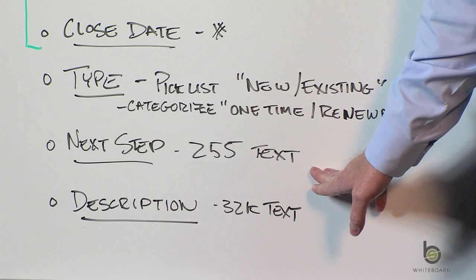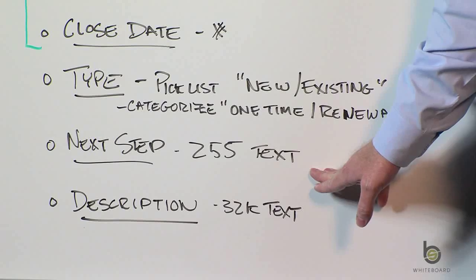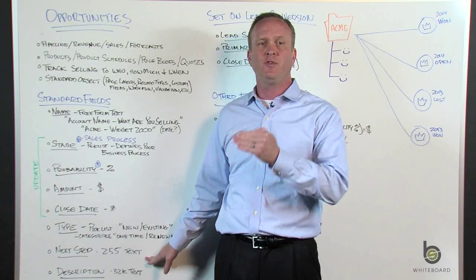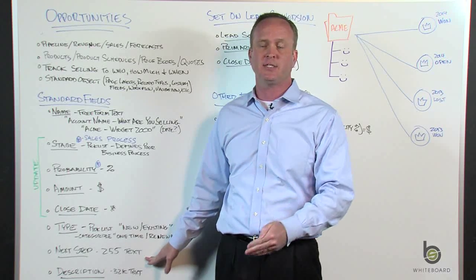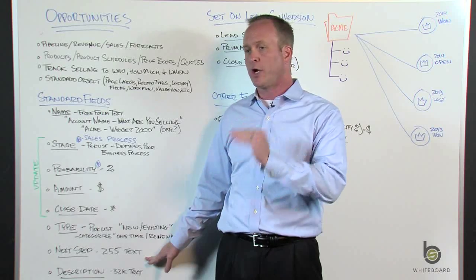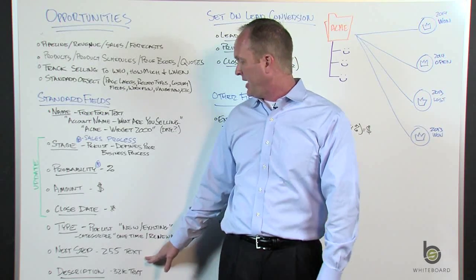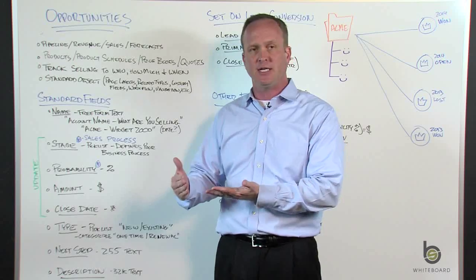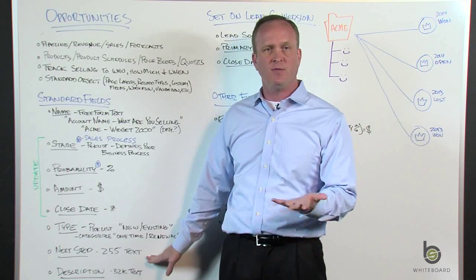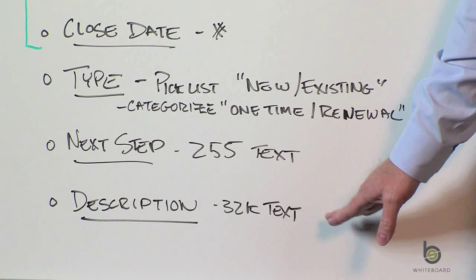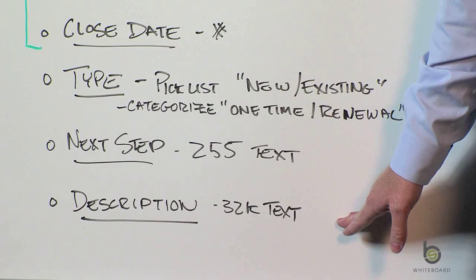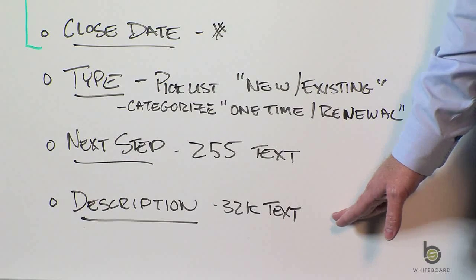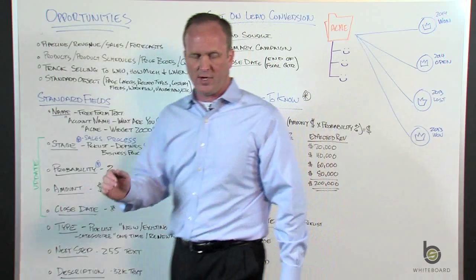Next Step is a 255-character text field. I like to use this field to let everybody know what needs to happen to move the deal or opportunity stage forward in the process — for example, a blurb about what's happening right now or the action needed to move to the next step. And then you have a description field, a very large 32,000-character text field, where you can describe who you're selling to, more in depth about the product, the factors at play.